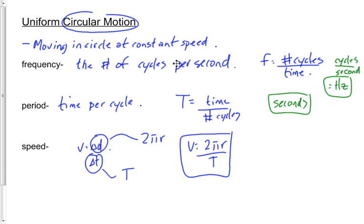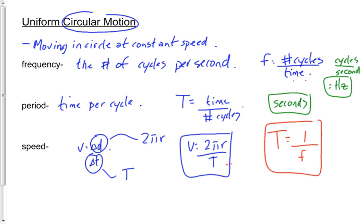The frequency equation and period equation don't appear on your data sheet because they're really just definitions. The speed equation does appear on your data sheet. The final relationship combines frequency and period: since frequency is cycles per time and period is time per cycles, the period equals 1 over the frequency — T equals 1 over f. This one does appear on your data sheet because it's a real equation, not just a definition.